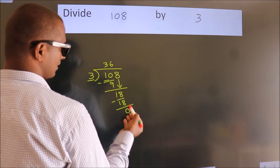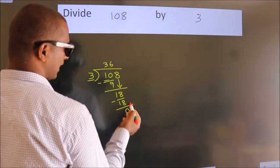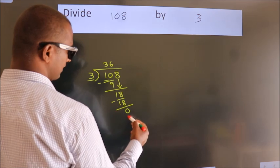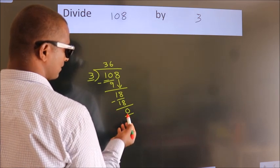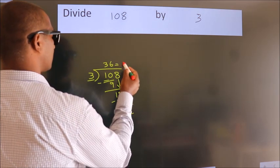After this, no more numbers to bring it down. And we got remainder 0. So, this is our quotient.